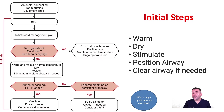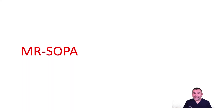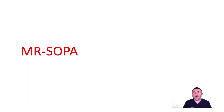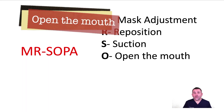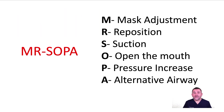We need to ventilate at a rate of 30 to 60 breaths per minute. If the heart rate is not increasing within 15 to 30 seconds of starting ventilations and you do not observe chest movement, start your ventilation corrective steps using the Mr. SOPA mnemonic. The Mr. SOPA mnemonic includes six corrective steps: Mask adjustment, Reposition, Suction, Open the airway, Pressure increase, and Alternative airway.